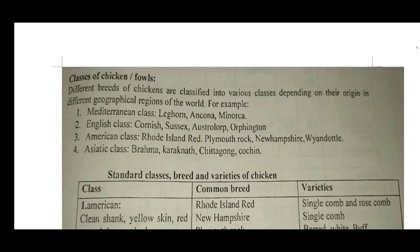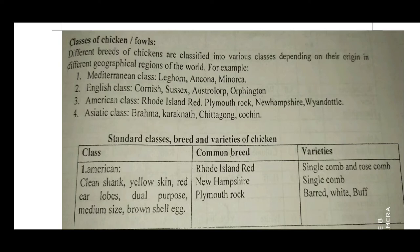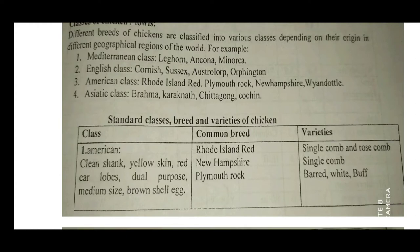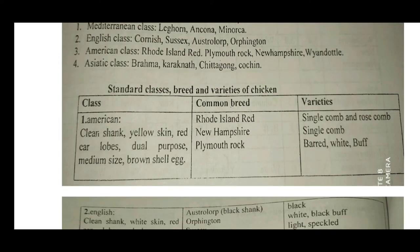Different breeds of chickens are classified into various classes depending on their origin in different geographical regions of the world. For example, the Mediterranean class includes Leghorn and Corunica Americana. The English class includes Cornish and Orpington. The American class includes Rhode Island Red, Plymouth Rock, New Hampshire, and White Hotel. The Asiatic class includes Brahma, Cochin, Chittagong, and Cochin.